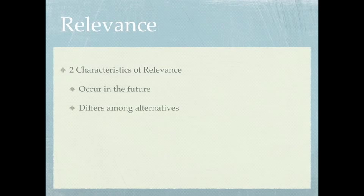For example, if we're debating on whether we should choose choice A or choice B, the only relevant information is what differs among them. If it doesn't differ among them — in other words, it wouldn't matter if we chose A or B because this information would not change — that would not be relevant and we would not include that in the decision-making process.